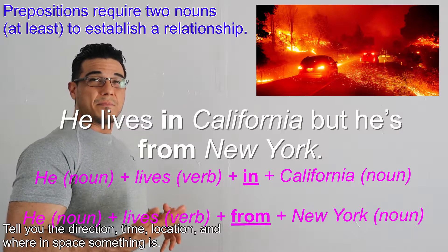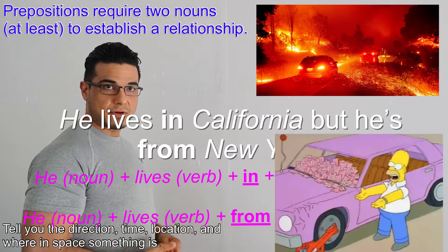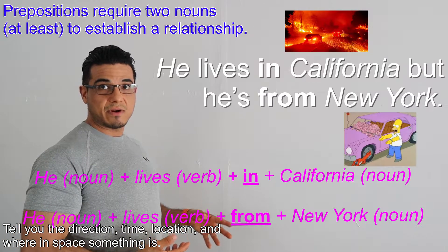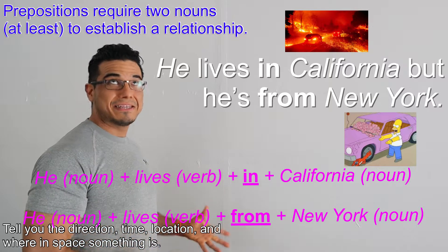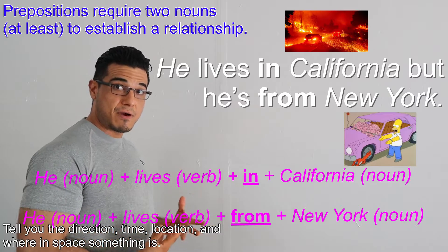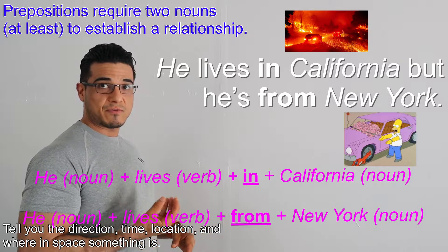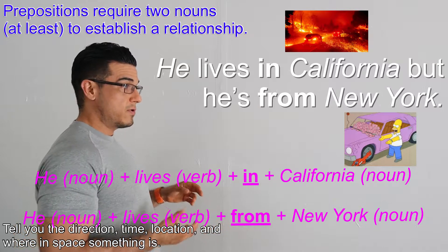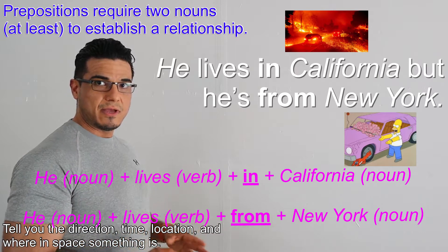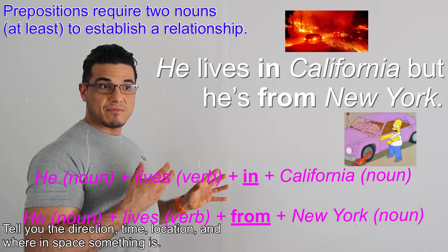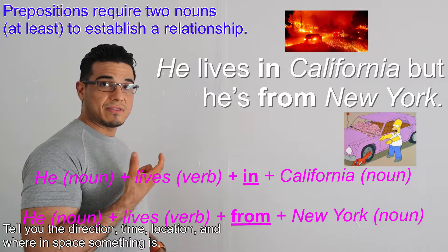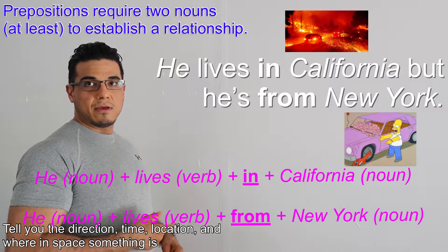He lives in California, but he's from New York. So 'he' being the first noun, 'lives' being the verb, but 'he's from' — we're still referring to him — New York. So where he lives now in relation to where he lived before. We still have 'from,' in this case, being the preposition acting upon the object New York.